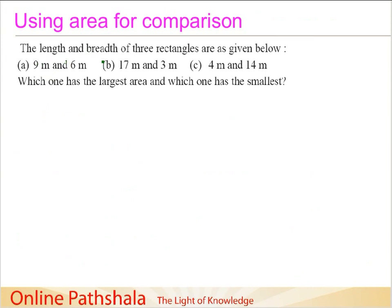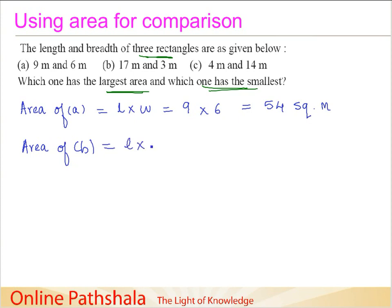In this example they say that the length and breadth of 3 rectangles are given below. Which one has the largest area and which one has the smallest? Let us proceed to find out the area of rectangle A equals length into width, which is 9 meter multiplied by 6, which gives us 54 square meters. Now, we look at area of rectangle B, which is again given by length into width, and we have 17 multiplied by 3, which is 1 carried over, so we get 51 square meters.